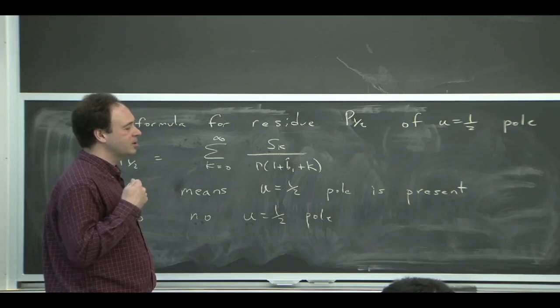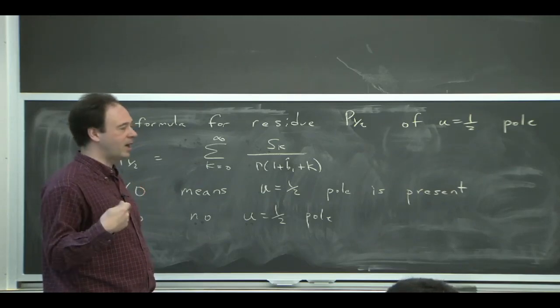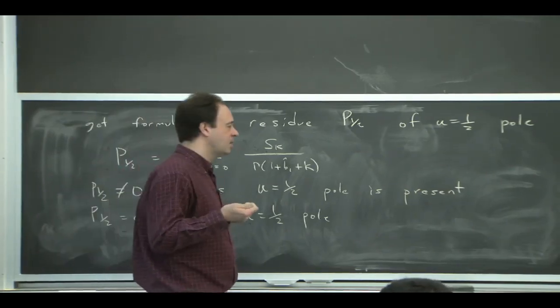So you could, we said the U equals a half is the most important. Let's get rid of that one from the MS bar mass. There would be, in principle, higher ones.